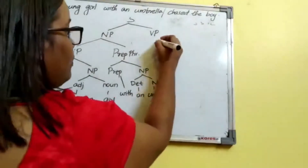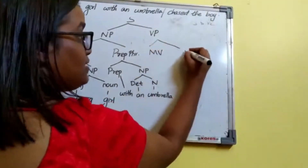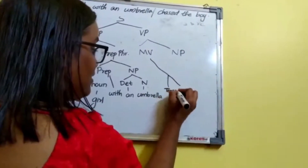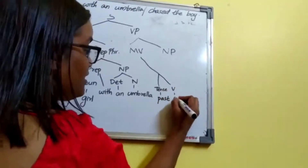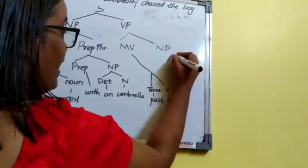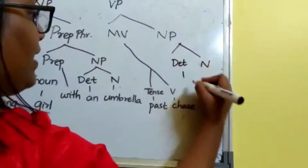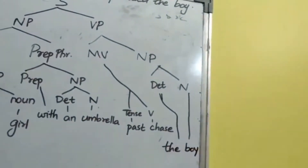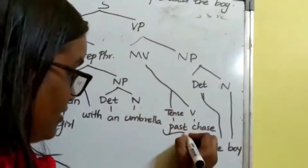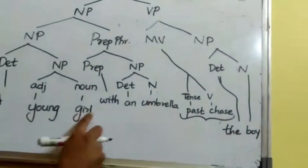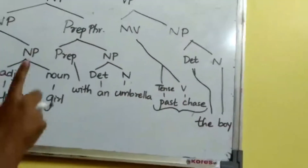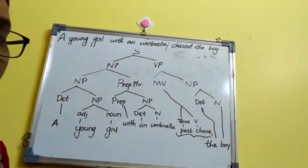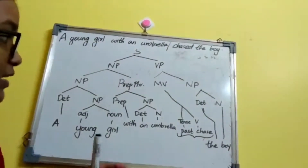Now for VP 'chased the boy': VP is main verb plus noun phrase. The main verb splits into tense plus verb — tense is past and verb is 'chase'. NP is 'the boy': determiner is 'the' and noun is 'boy'. So: 'A young girl with an umbrella chased the boy.' I hope you get a better picture of how to do IC analysis using this bigger sentence. It might look a little complicated, but as you work it out it will become really easy.